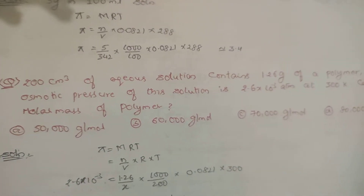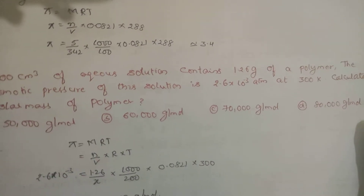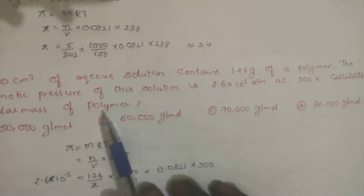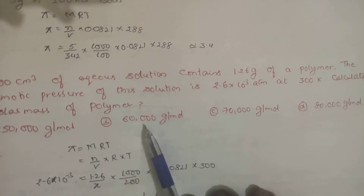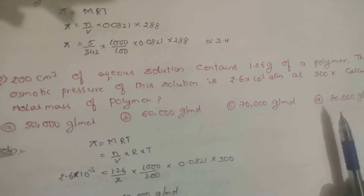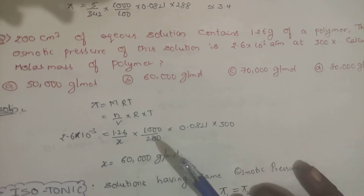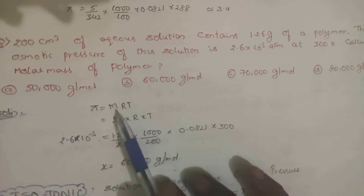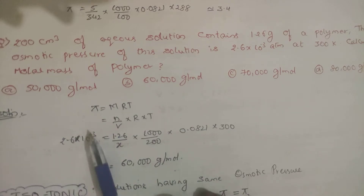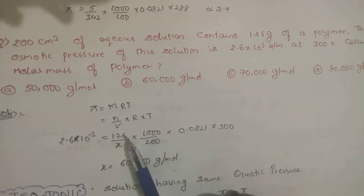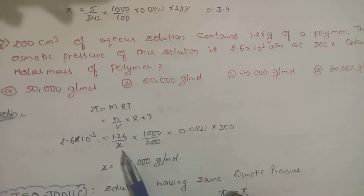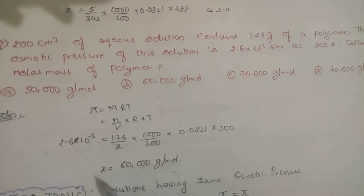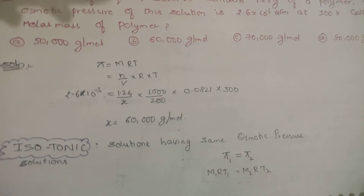Next question: 200 cm³ of aqueous solution contains 1.26 g of a polymer. The osmotic pressure is 2.6 × 10⁻³ atm at 300 K. Calculate the molar mass of the polymer. Options: 50,000, 60,000, 70,000, or 80,000 g/mol. Using π = (n/V)RT: 2.6 × 10⁻³ = (1.26/x) × (1000/200) × 0.0821 × 300. Solving gives x = 60,000 g/mol.